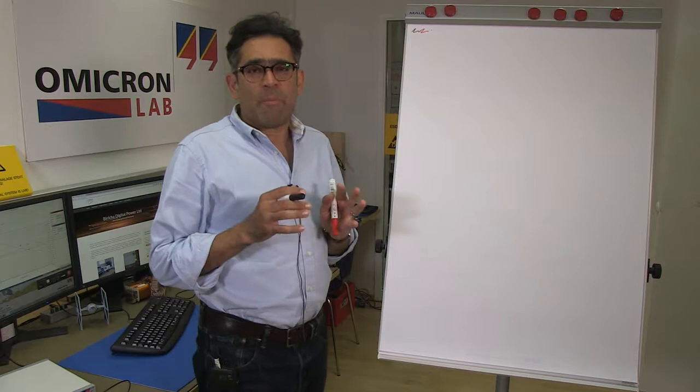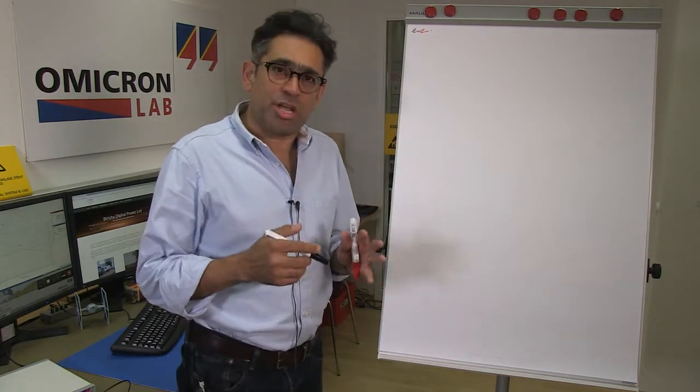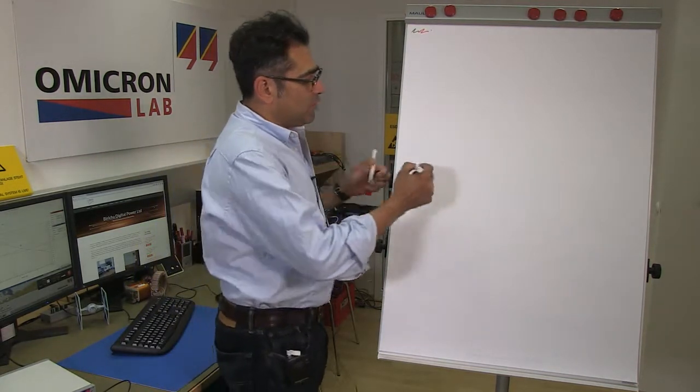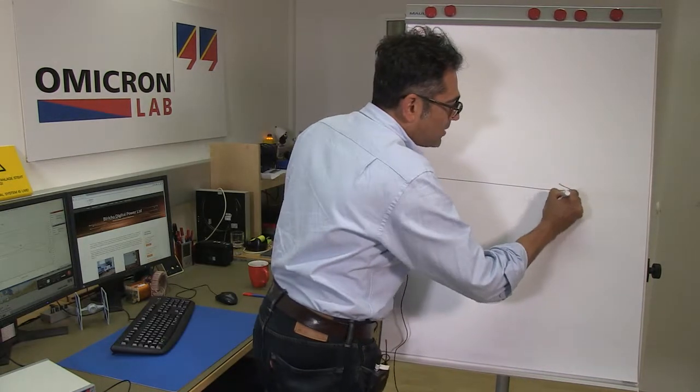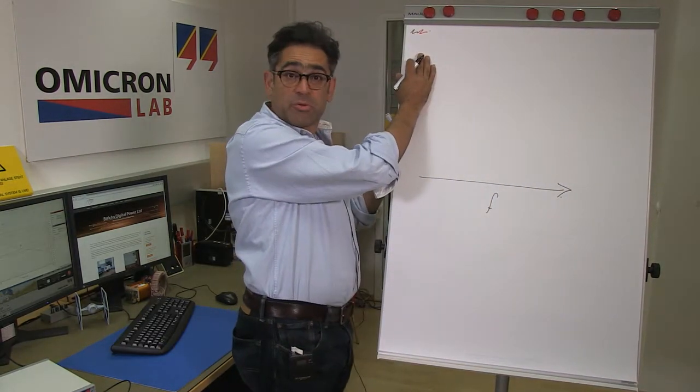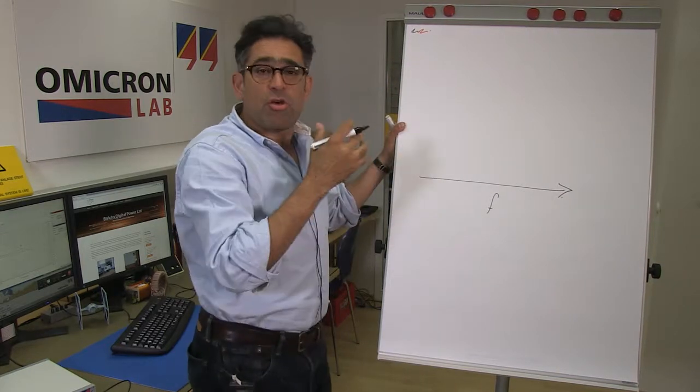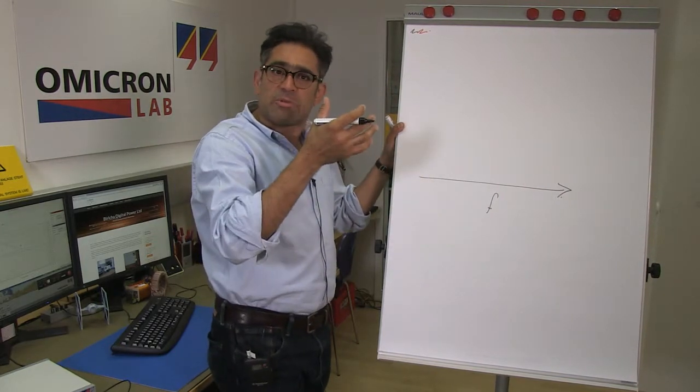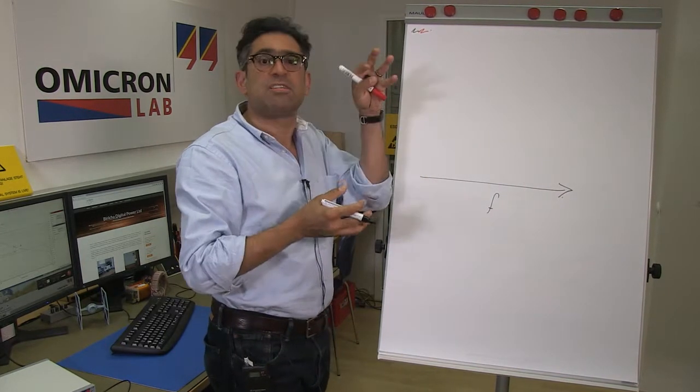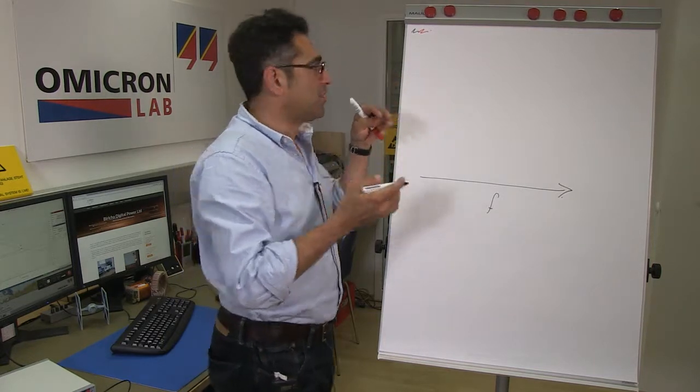So how do we go about selecting the size of the injected signal? We know that with respect to frequency our power supply has got very high gain at low frequencies. So that means that it's going to reject any disturbance and therefore we're going to have to increase the size of the injected signal at low frequencies.